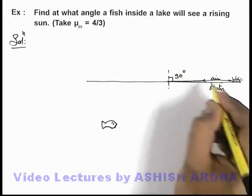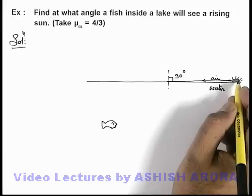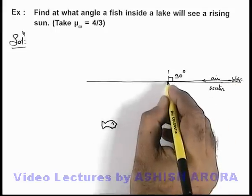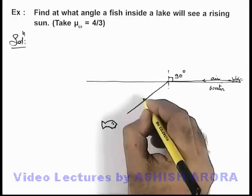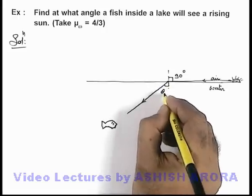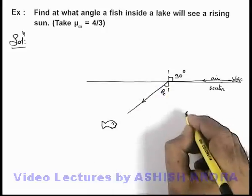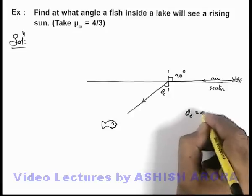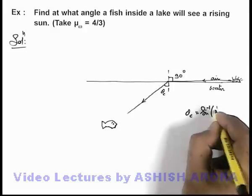So these light rays which are coming from the rising sun in grazing manner will enter into the water at an angle of critical value theta c. The value of theta c we know is given as sine inverse of 1 by mu.